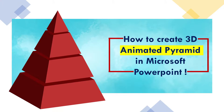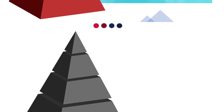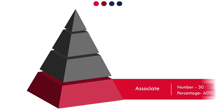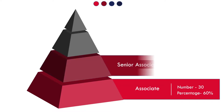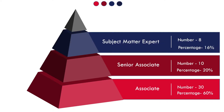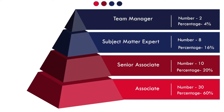This pyramid will be looking like this. When we click on it we are going to see the first level, on the second click we are going to see the second level, on the third click we are going to see the third level, and finally on the fourth click we are going to see the fourth level.